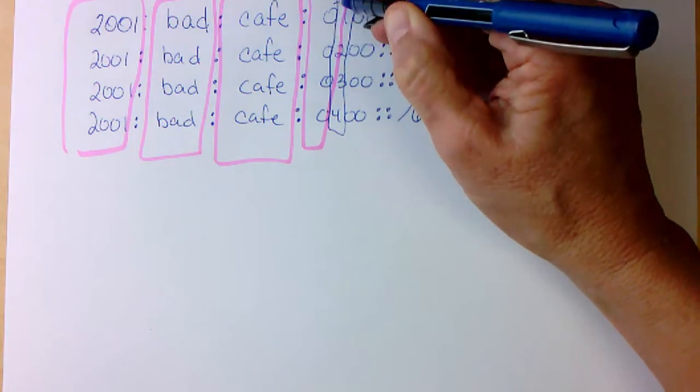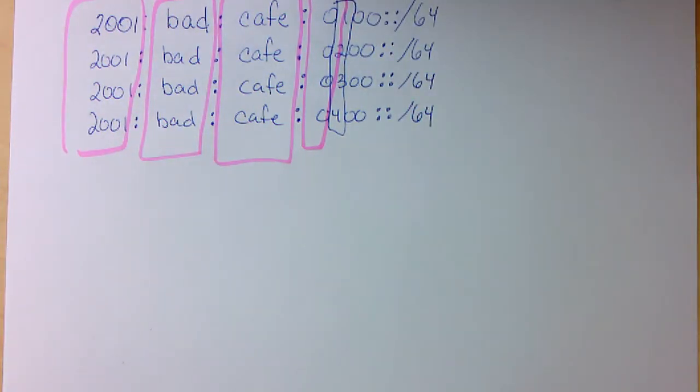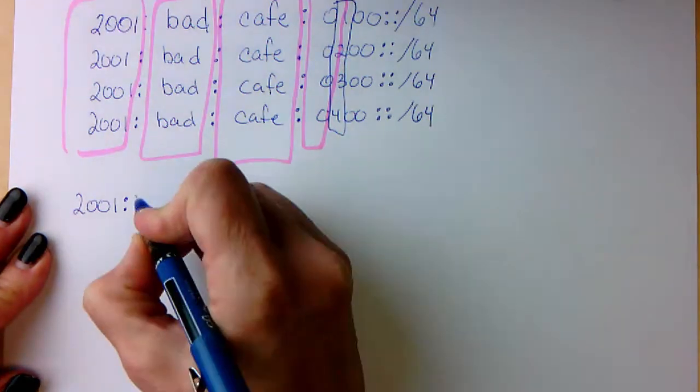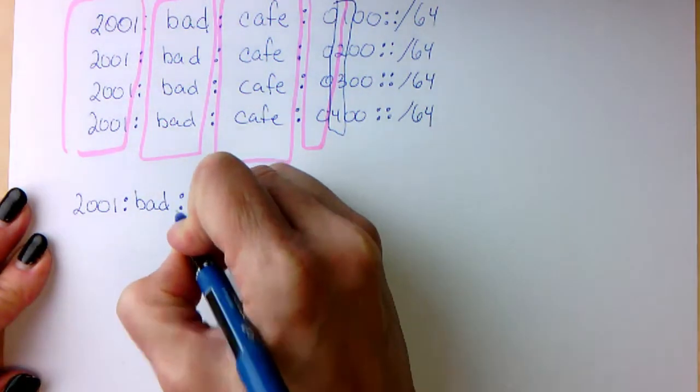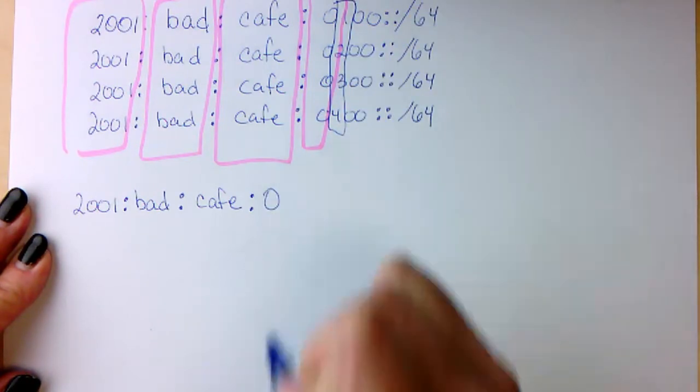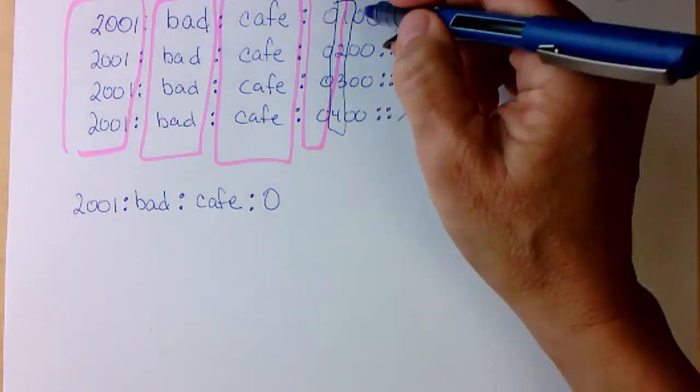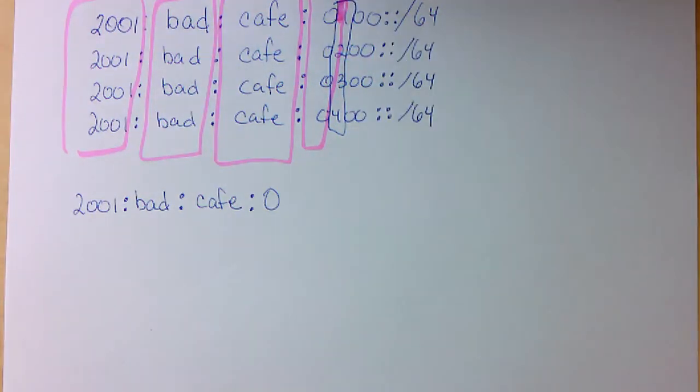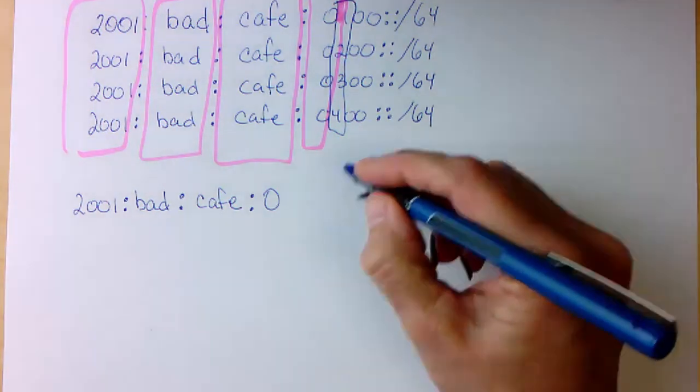In order to determine what they have in common, the easiest way to do that is to go ahead and break that into binary. Let's carry down what we know to be true. We know that 2001 is going to be part of the summary network address, bad is going to be part of the summary address, cafe will be part of the summary address, and the zero will be. Now we just have to figure out the rest.